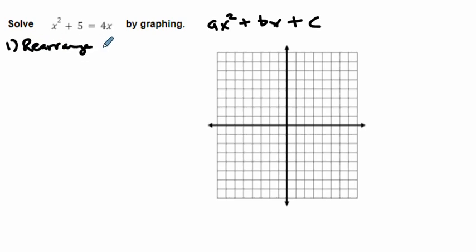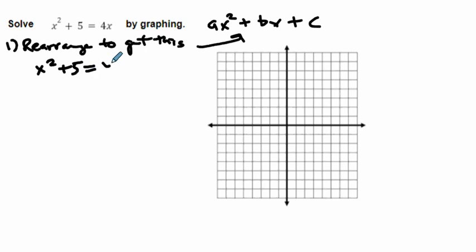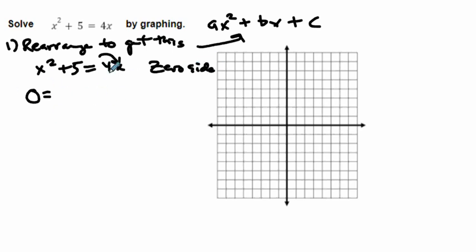So I'm going to rearrange to get this looking like standard form. If I've got x squared plus 5 equals 4x, I want everything on one side and zero on the other side. I'll make this the zero side, so my 4x needs to go over to the other side.